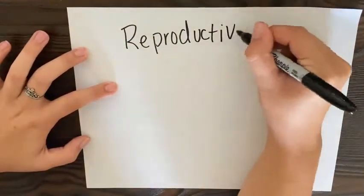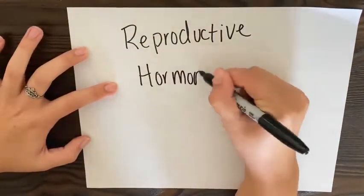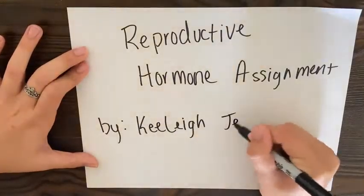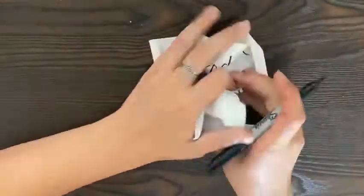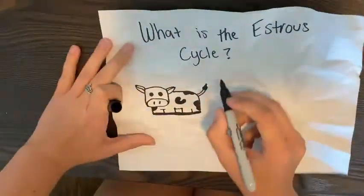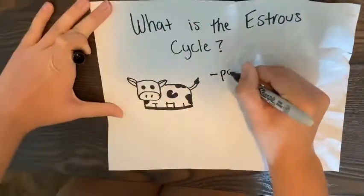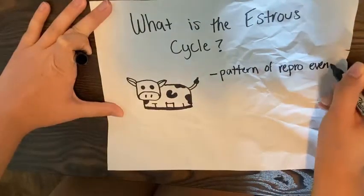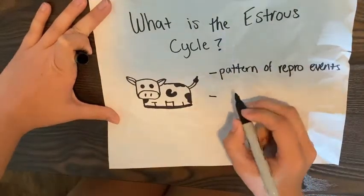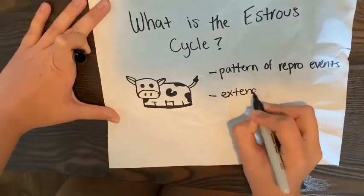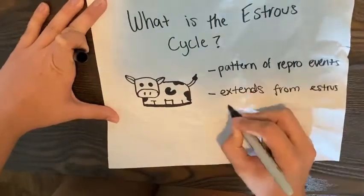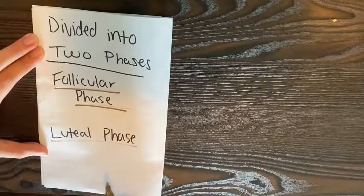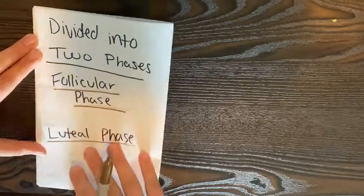This is Reproductive Hormones in the Estrus Cycle by Keeley Jenkins. The Estrus Cycle is a predictable pattern of reproductive events that occur within animals. It is initiated by the expression of an animal in heat, or estrus, and concludes at the following estrus. The Estrus Cycle is divided into two phases.